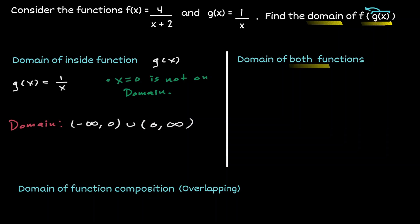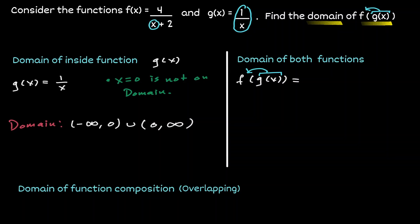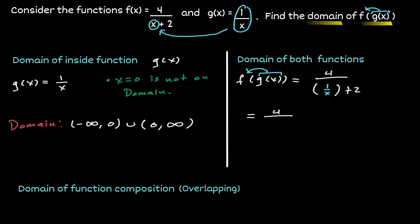Now let's find the domain of the composition — what I'm referring to as both functions. If we take g(x) and substitute it inside f, we get the expression 1 over x substituted into f. We end up with 4 divided by (1/x + 2). Now let's concentrate on the denominator of this fraction and try to write it as a single expression.